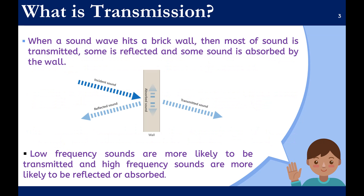When a sound wave hits a brick wall, then most of the sound is transmitted, some is reflected, and some sound is absorbed by the wall. Low-frequency sounds are more likely to be transmitted, and high-frequency sounds are more likely to be reflected or absorbed.